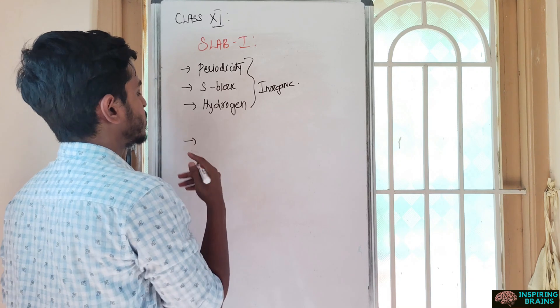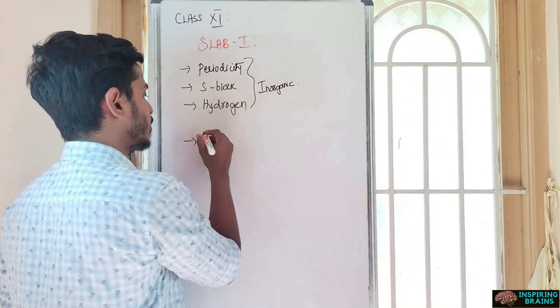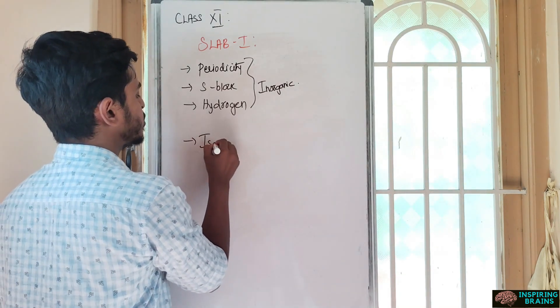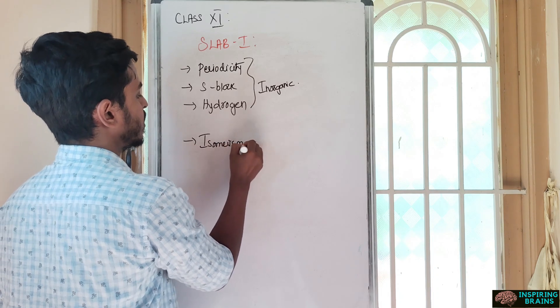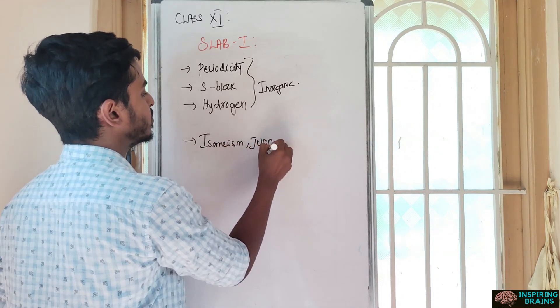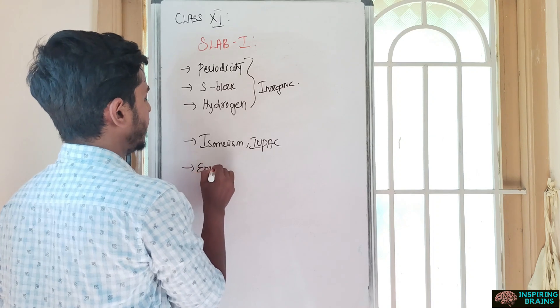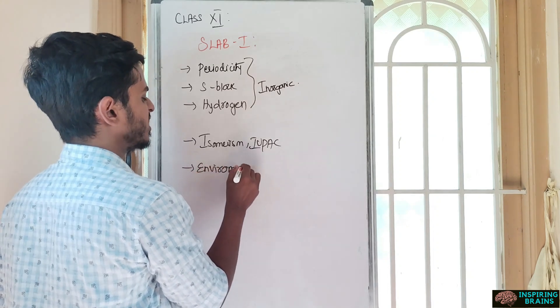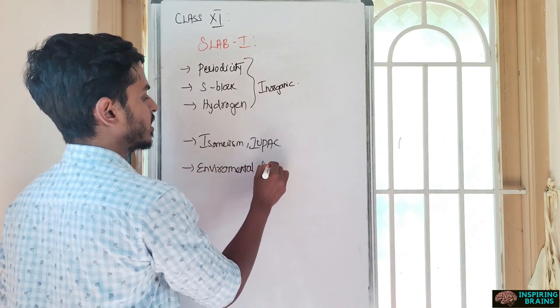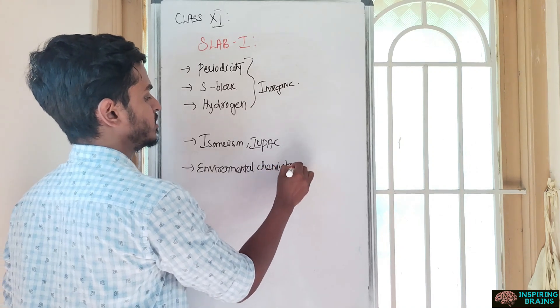Organic - at least go with some isomerism, then IUPAC naming, how to name the compounds. Next study environmental chemistry. It's theory and you can clear it easily. It's a very easy unit.